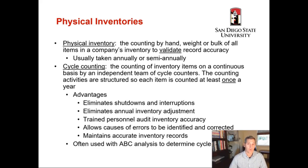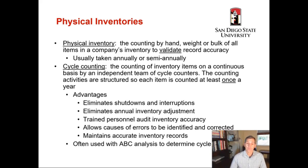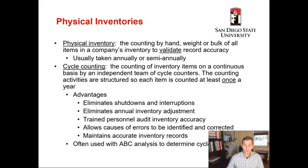Trained personnel audit the inventory accuracy. These are folks who work in the stock room most likely, counting a select amount of products every day. Because they're trained, they know where the inventory is, so it's easier to find and count it. Cycle counting allows causes of errors to be identified and corrected in real time. If you think 100 items are there and you do a cycle count and find only 90, it gives your purchasing team more time to go buy the 10 units you're short. It also helps maintain accurate inventory records and is often used with ABC analysis to determine the cycle counting policy.